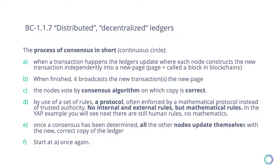So the process of consensus in short. Consensus is nothing more than what is the truth — what is the current state of truth? In other words, if there are multiple entities maintaining the ledger, we all need to be sure that we have the exact same ledger. Imagine it's not only 10 friends in a room, but we replace the room with a world. All of a sudden we have people from all around the world starting to transact.